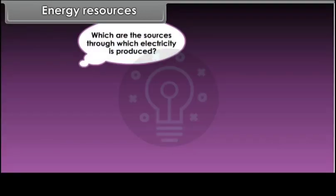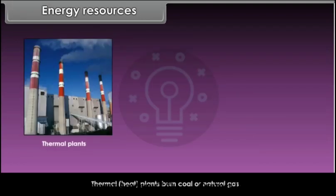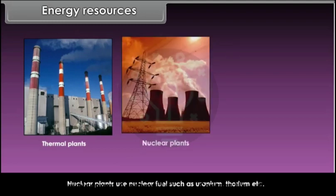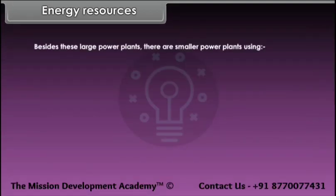Electricity is produced from large power plants. Thermal or heat plants burn coal or natural gas. Nuclear plants use nuclear fuel such as uranium, thorium, etc. Hydroelectric power plants use the force of falling water. Besides these large plants, there are smaller power plants using geothermal, solar and wind sources.